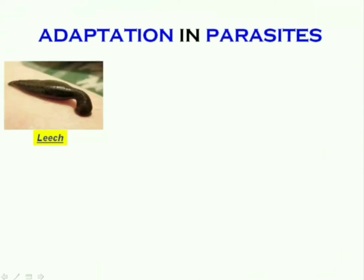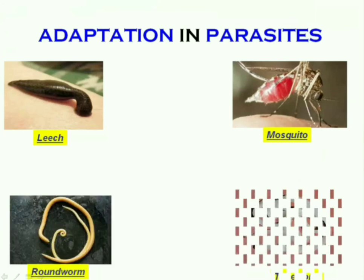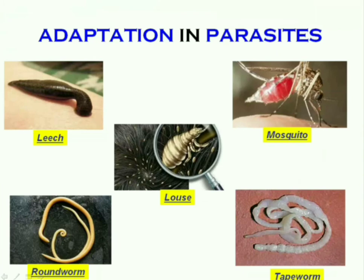Parasites are animals that live on or inside the bodies of other animals to obtain their food — for example, leech, mosquito, roundworm, tapeworm, and louse. Mosquito is the most common parasite. These animals have straw-like suckers to suck in their food from the body of the host animal.